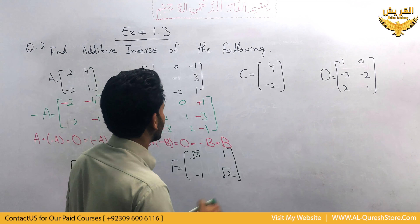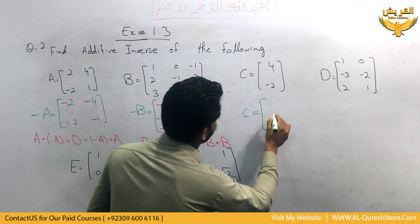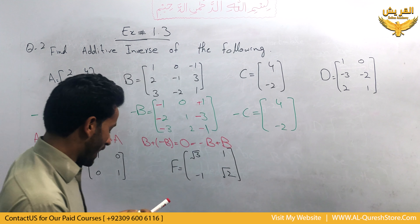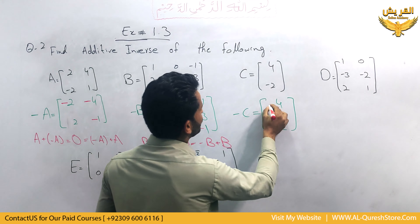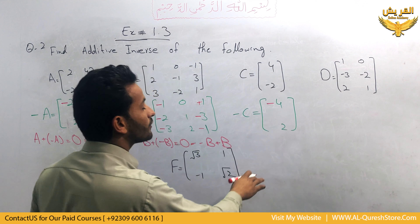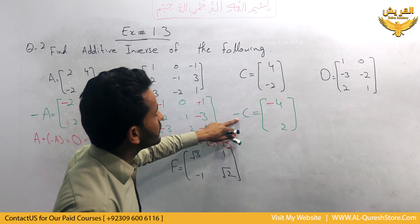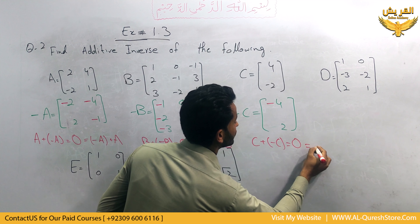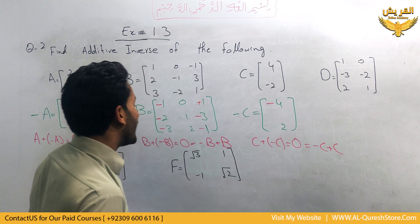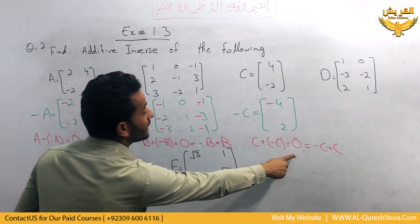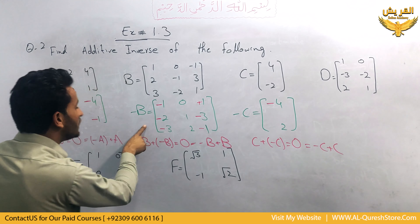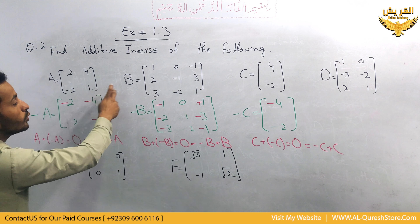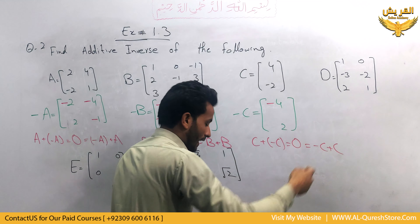For matrix c, the additive inverse is minus c. Matrix c has elements 4 and minus 2. We change the signs: for 4 we use minus 4, and for minus 2 it becomes plus 2. So the additive inverse of c is minus c, and c plus minus c equals the null matrix, which is of the same order as c. The null matrices are of the same order as their respective matrices: 2 by 2, 3 by 3, and 2 by 1.